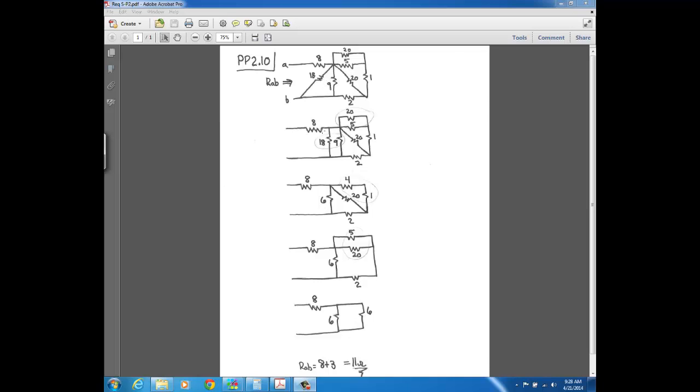The 18-ohm resistor was just redrawn, so it's straight up and down instead of at an angle. And you see after it's drawn straight up and down, it's still connected to the same two nodes, top and bottom, as it was up in this circuit. And it's just easier when it's drawn like this, where it's vertical, to see for some people. Again, it's not necessary for all people to redraw. But you can see more clearly that the 18 and 9 are in parallel.